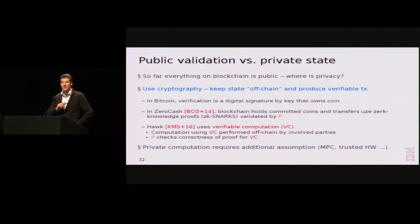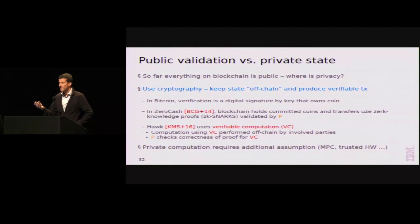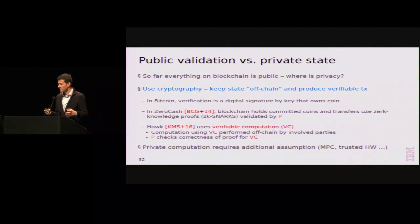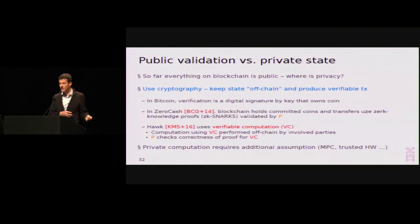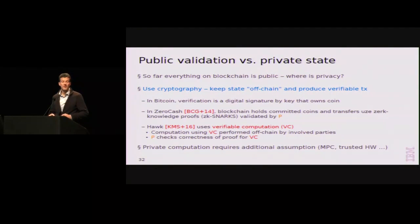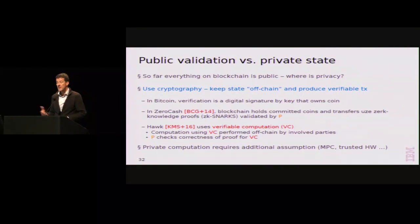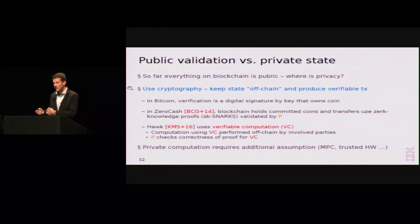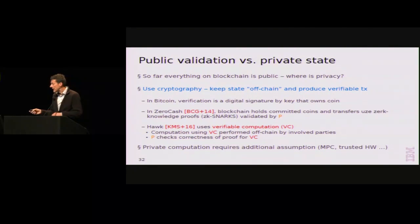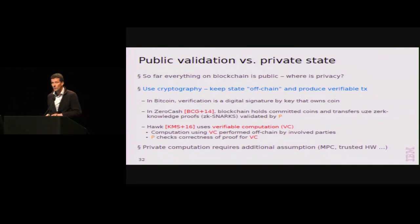A major area of interest for cryptographers is that in blockchains, since all state is replicated among all nodes, there is by definition no privacy. So why do we think that blockchain adds privacy? There have indeed been many research developments to add privacy back to blockchain systems, starting with Bitcoin and earlier systems such as Zerocoin and Zerocash, all the way to a system called Hawk, which demonstrates how to do this for arbitrary computations.